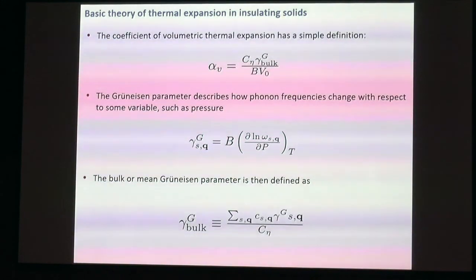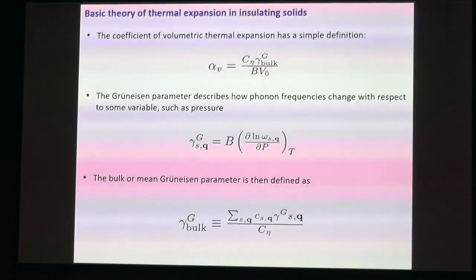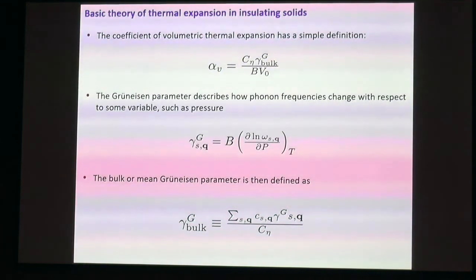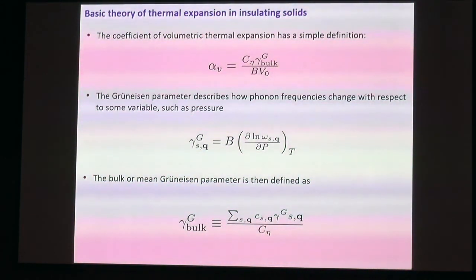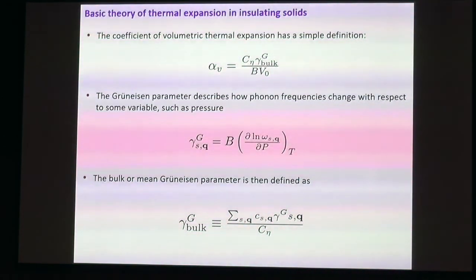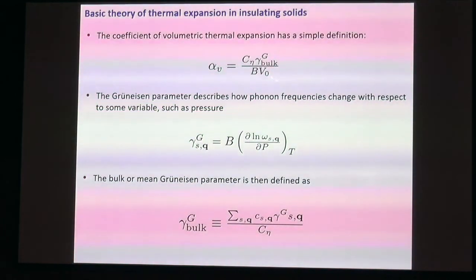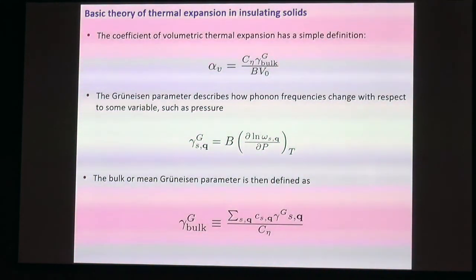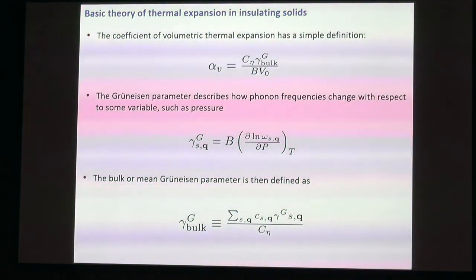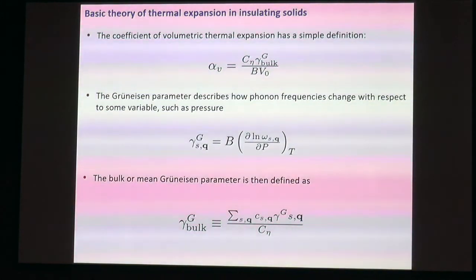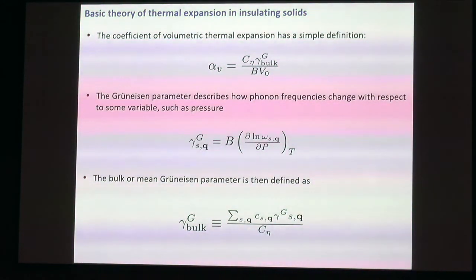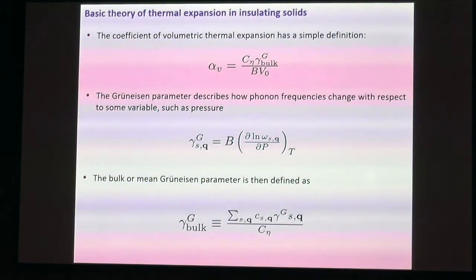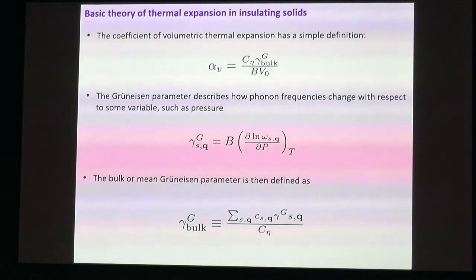γ_G is the thermodynamic bulk Gruneisen parameter, multiplied by the specific heat at constant configuration. In the denominator is just the bulk modulus at temperature T and the volume—a relatively simple expression. The Gruneisen parameters tell you about how phonon frequencies change with respect to some variable, in this case pressure. This is the mode Gruneisen parameter for mode S at wave vector Q. The bulk Gruneisen parameter is the sum of those individual mode Gruneisen parameters across the Brillouin zone, weighted by their mode-specific heats.